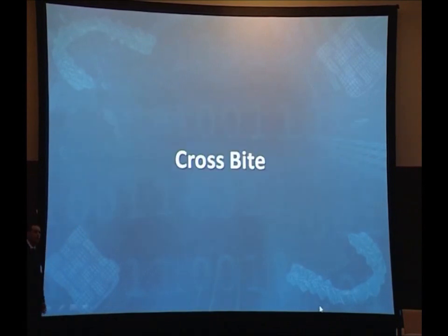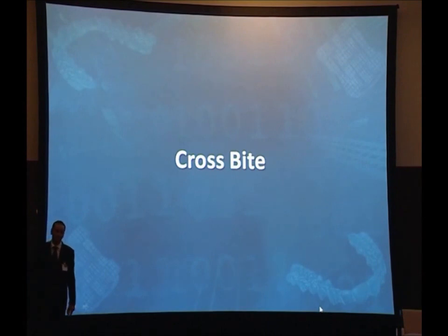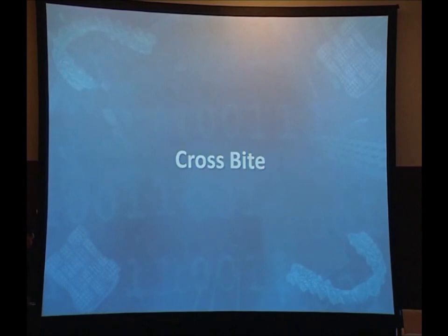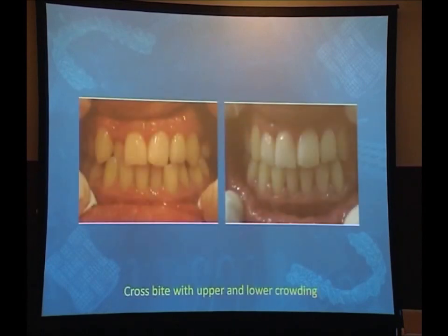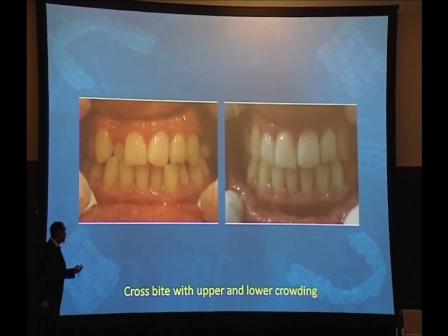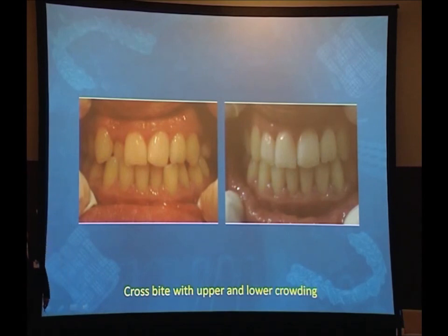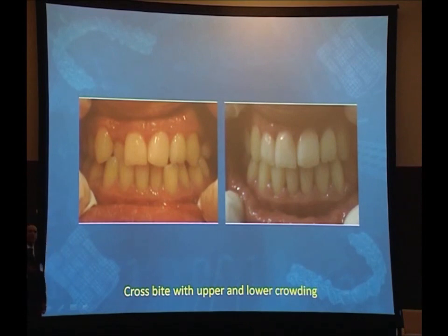Cross bite is one of the good indications to use aligners. This is a very good example of correction of cross bite using aligners. The problems in this case were cross bite, midline shift, and upper and lower crowding. They always say that correction of canine position with aligners is not so easy, but with the advancements in aligner fabrication technology, we can do this job very easily nowadays — with very good correction of the lower and upper arch.